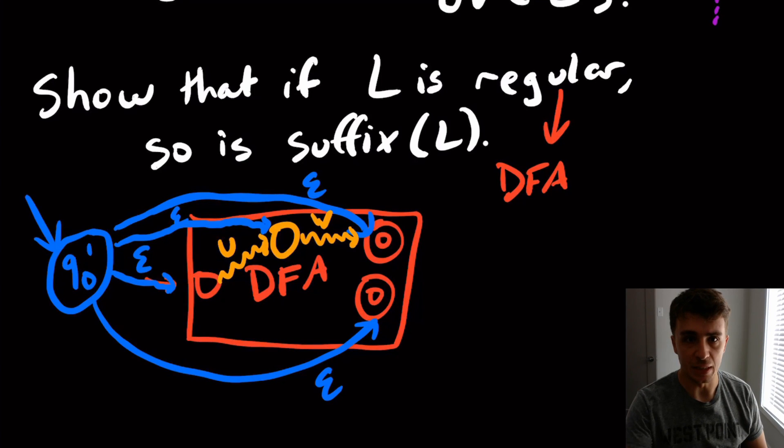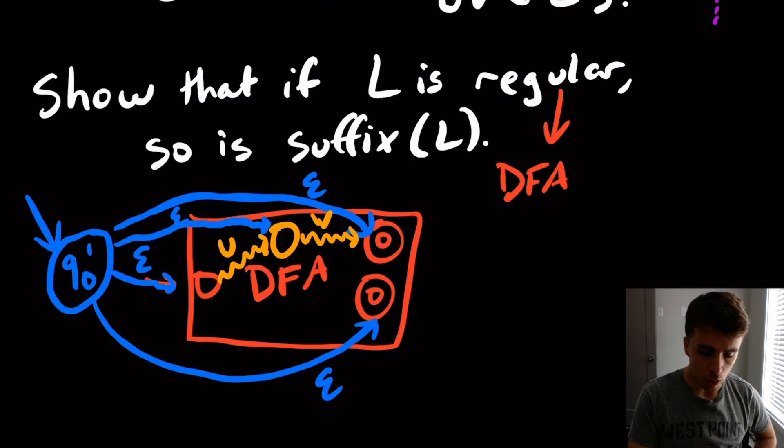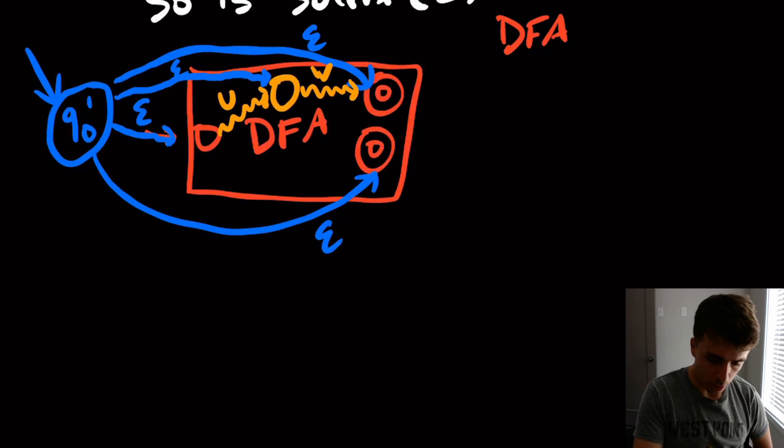Hi and welcome back to another edition of Easy Theory. Today we're going to do an example of what we just proved, which is showing that regular languages are closed in their suffix. I'm going to create an example right now. I have not done this example before. This is completely done live. So let's look at a particular example right here.